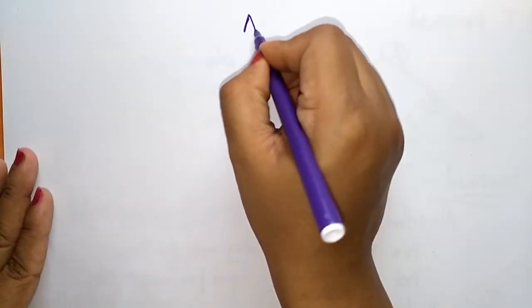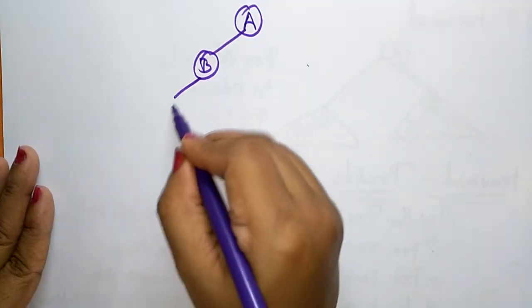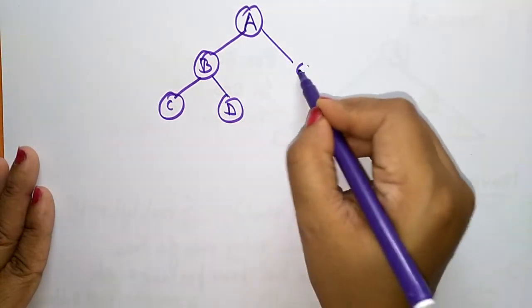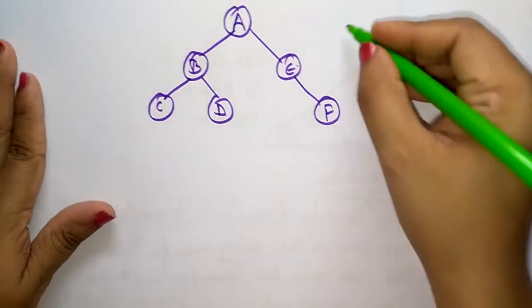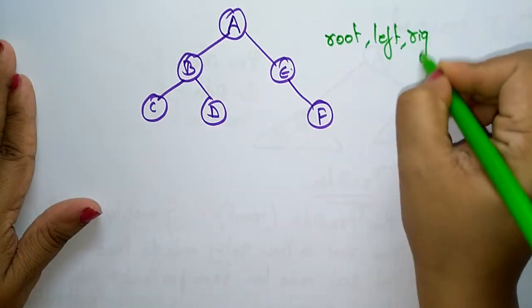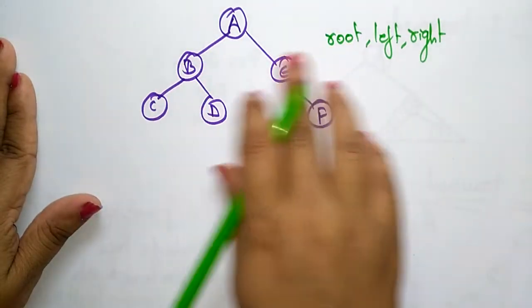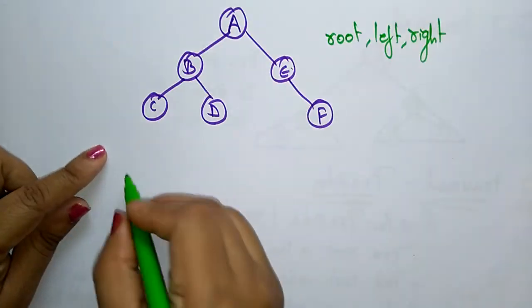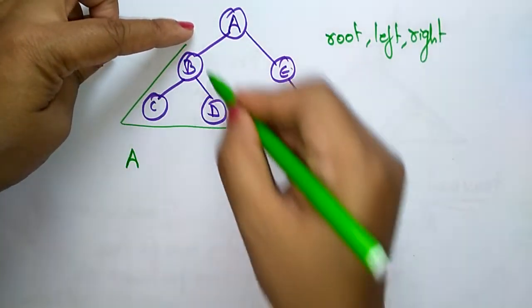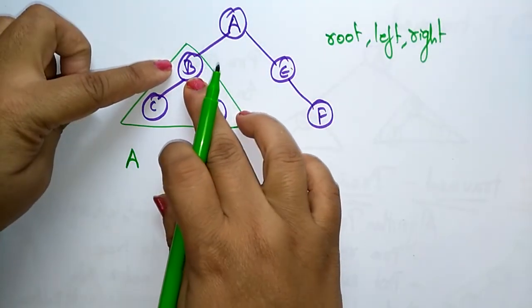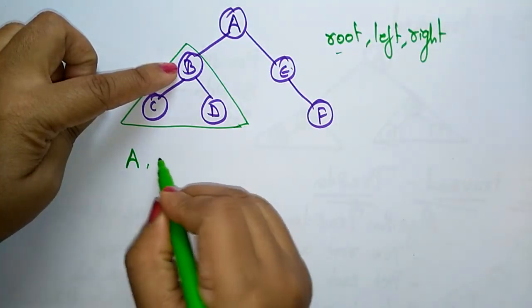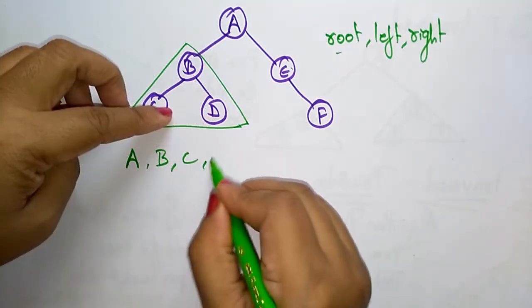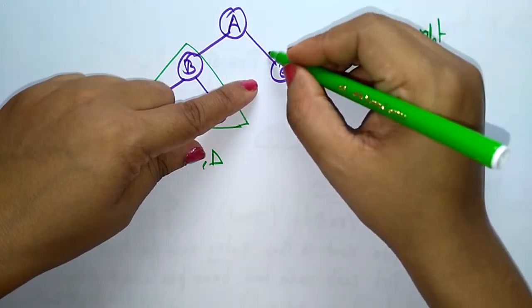Let's take an example with the previous tree: A, B, C, D, E, F. The pre-order condition is root, left, right — remember this. First, visit the root: A. Now coming to the left subtree — in the left subtree, you again have a root, so first visit that root, then left, then right.